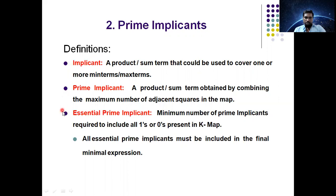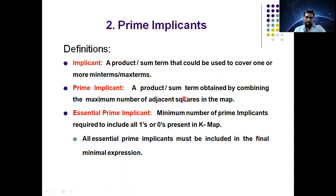The three definitions you are seeing on the screen are very, very important. What is an implicant? A product term or a sum term which is used to cover one or more min terms or max terms is called an implicant. Then, what is a prime implicant? A product term or a sum term which is obtained by combining the maximum number of adjacent squares — adjacent squares means adjacent cells in the K-map.